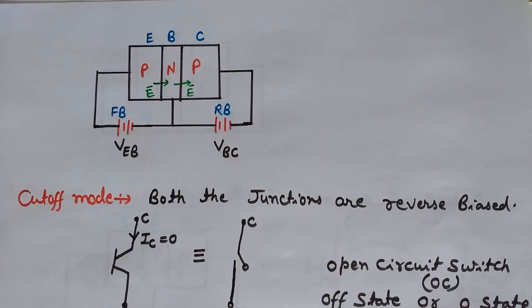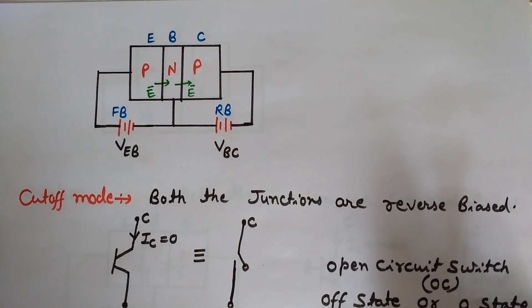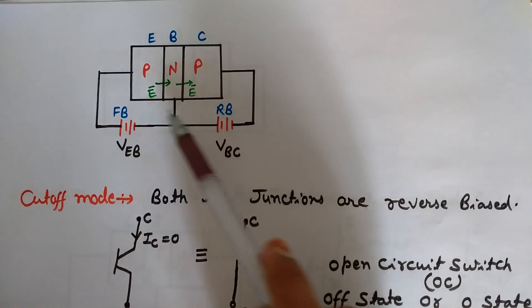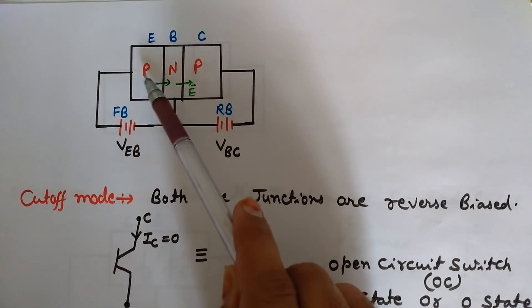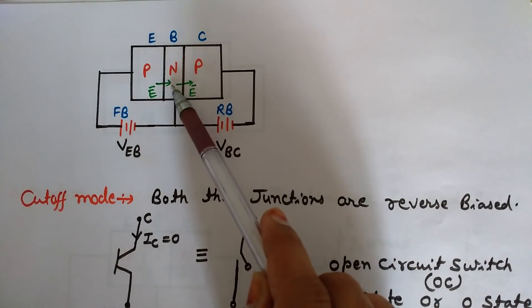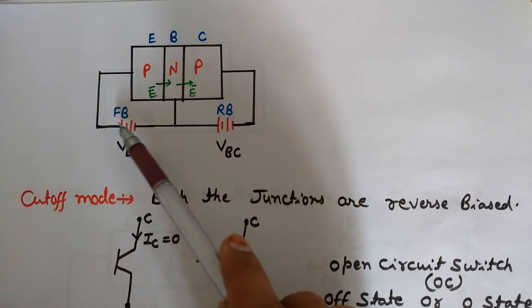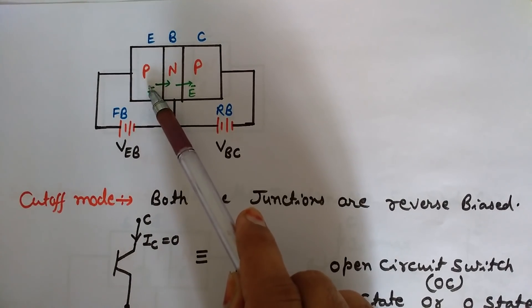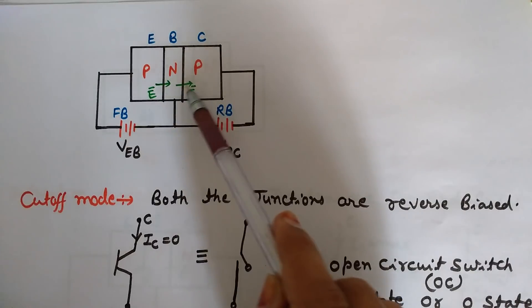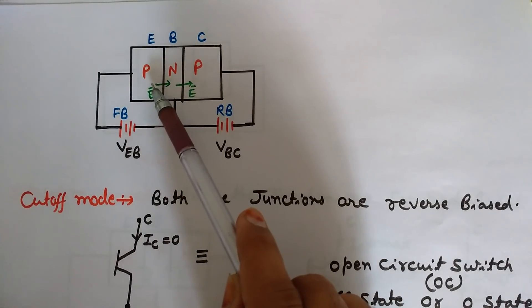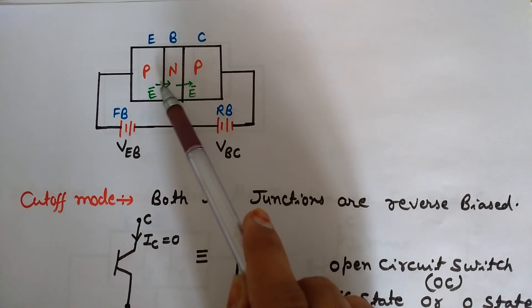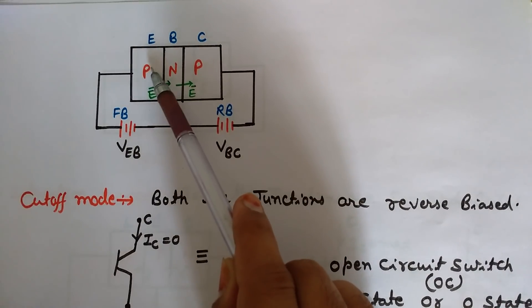Now we will see how things take place in the PNP transistor in active mode. The emitter-base junction is forward biased and the collector-base junction is reverse biased — this is the basic condition for the active region. Since the emitter-base junction is forward biased, the P side is at high voltage and N at low. The electric field direction is always from higher voltage to lower voltage, and it supports the flow of majority carriers which are holes in PNP.